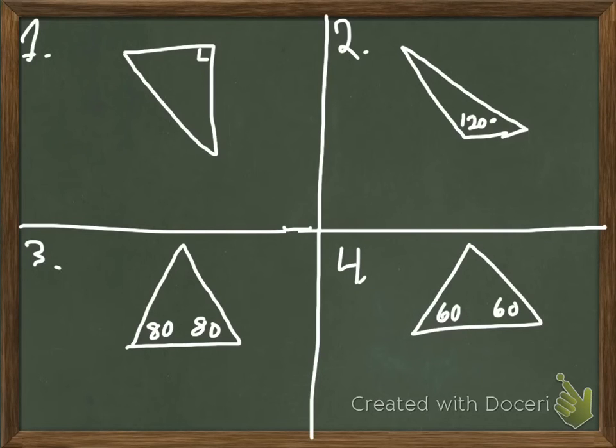Okay, here are some examples. In your group, pause the video and decide which of these triangles are equiangular, acute, right, or obtuse.